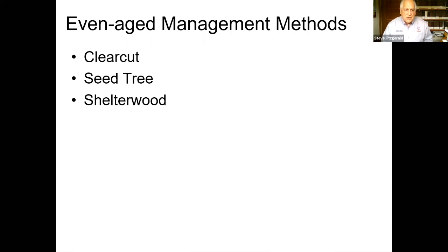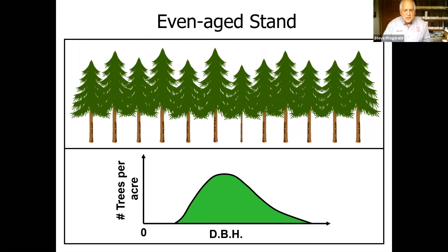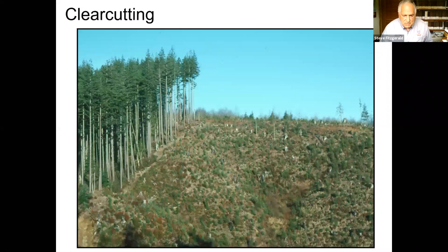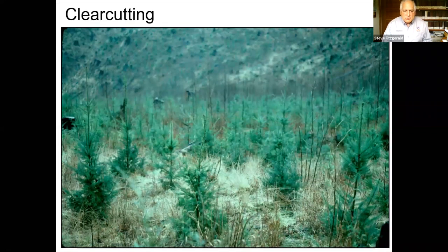As most of you probably know, clear cutting removes pretty much the entire stand. Here we have a 60 to 70-year-old stand that was harvested with logging equipment, went to the mill, and then reforested — basically replacing one even-age stand with another even-age stand. The tree seedlings have been planted at some density, 10 by 10 or similar, and vegetation was controlled to assure their survival and growth.